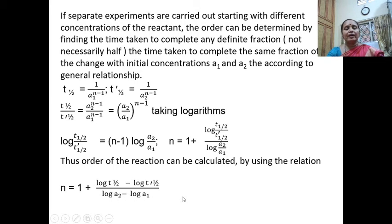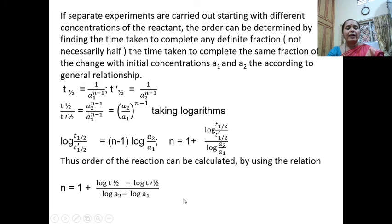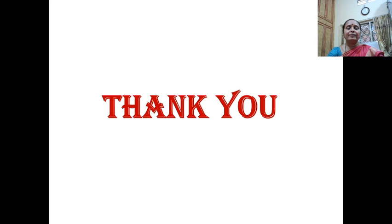So, by using this expression by the half-life method, we can determine the order of a reaction. In today's class, we studied the general expression for determining the order of a reaction using the half-change method. For two different initial concentrations, we determine the half-life, divide one equation by the other, take the logarithm, and on further simplification, get n = 1 + log(T-half) − log(T'-half) / log(a2) − log(a1). Thank you. With this, we complete how to determine the order of a reaction by the half-change method.